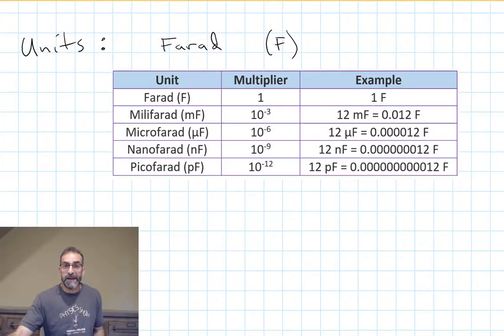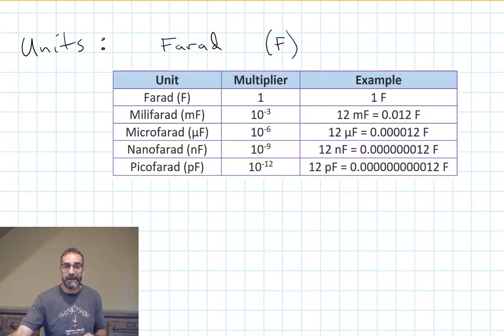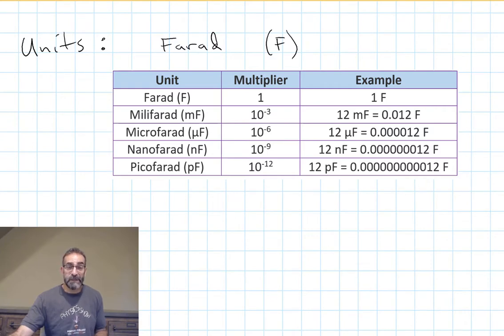The unit for capacitance is the farad, symbol F. The farad is a fairly large amount of capacitance — typically we see values in circuits that are microfarads or millifarads, sometimes picofarads, much, much smaller values. We are starting to see capacitances in the farad range — those are the supercapacitors and ultracapacitors I'm going to talk about in a minute. But typically in our circuits, it's usually microfarads or values in that area.